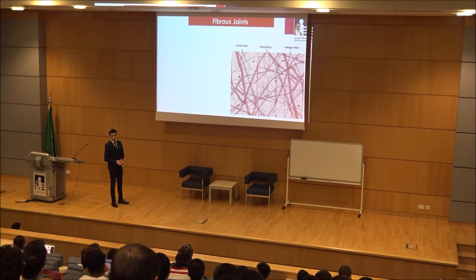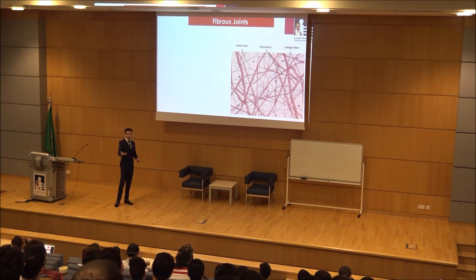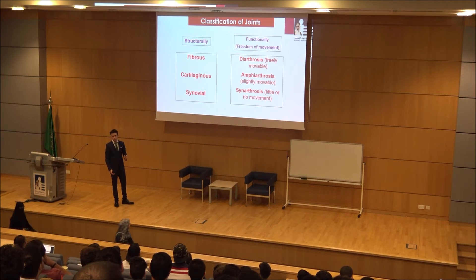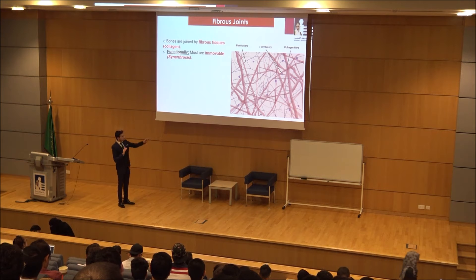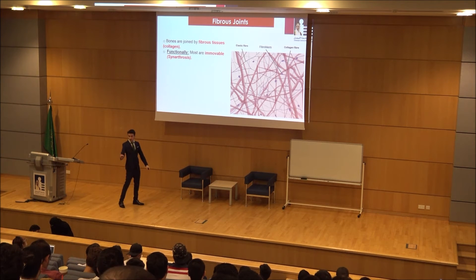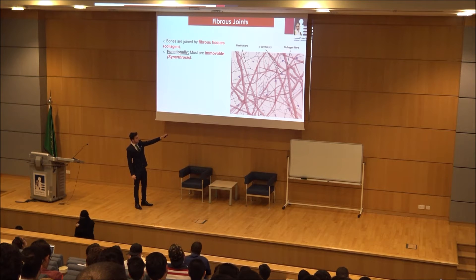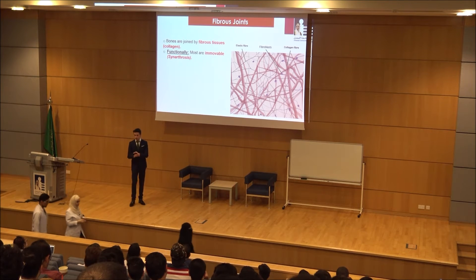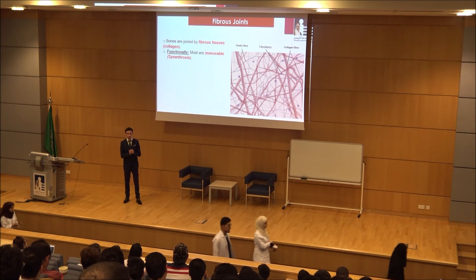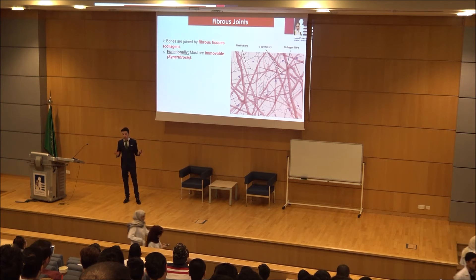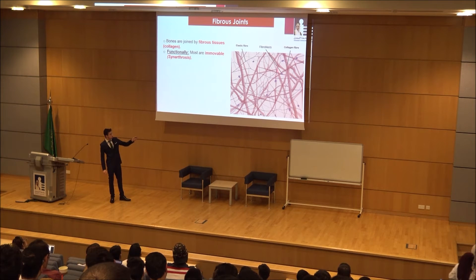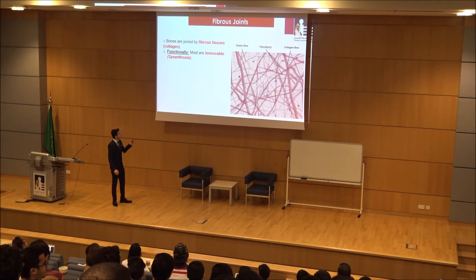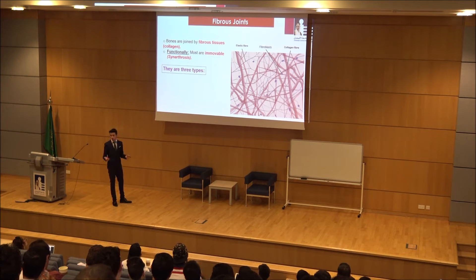Fibrous joints: a type of joint joined by fibrous tissue. Functionally, it is synarthrosis — meaning there is no movement at all, or very little. In the histological slide, the main characteristic is collagen fibers. 'Fibre' is British English, 'fiber' is American English — same thing. We also have subtypes of fibrous joints, and there are three.